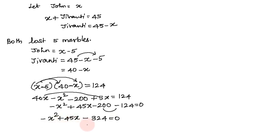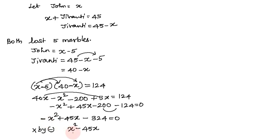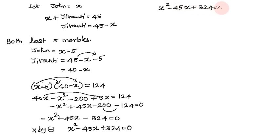Multiplying through by minus 1: x squared minus 45x plus 324 equals 0. This is our quadratic equation.